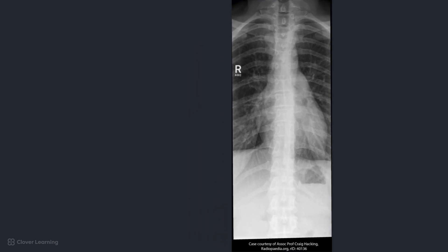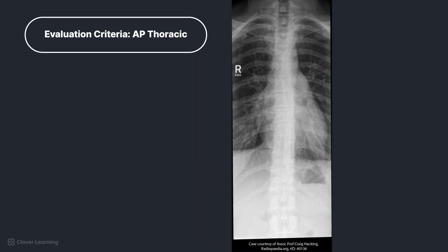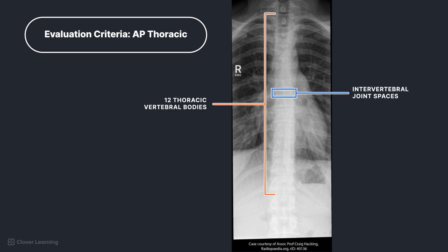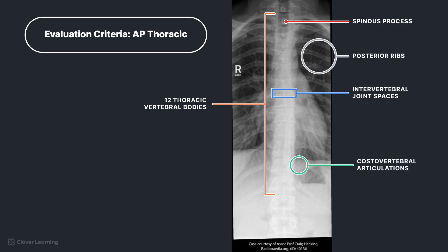If you said this radiograph is an AP projection of the thoracic spine, you're correct. While this may seem obvious to some, let's look at how we can tell radiographically. In this image, all 12 thoracic vertebral bodies, intervertebral joint spaces, and spinous and transverse processes as well as the posterior ribs and costovertebral articulations are demonstrated. It is a true AP because the sternoclavicular joints are equidistant from the spine and the spinous processes are demonstrated at the midline of the vertebral bodies.